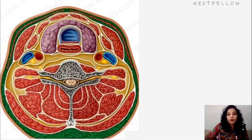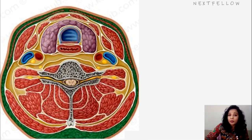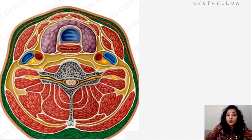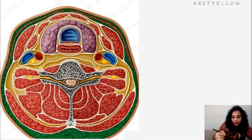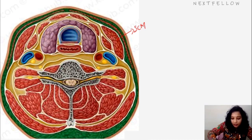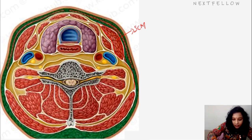Further talking about the superficial investing layer of the deep cervical fascia: it encircles the neck and splits to enclose the sternocleidomastoid and trapezius muscles. It also forms the roof of the posterior triangle of the neck. We can see here the sternocleidomastoid, and we can trace the investing layer of deep cervical fascia which splits to enclose the sternocleidomastoid anterolaterally.